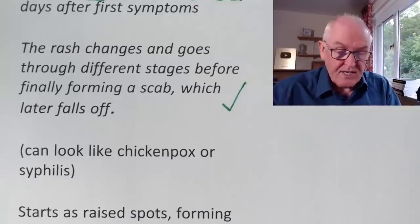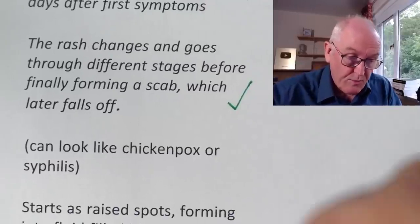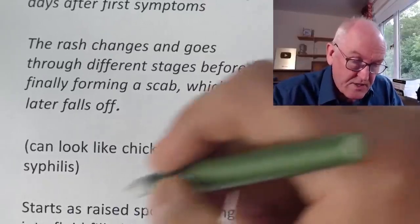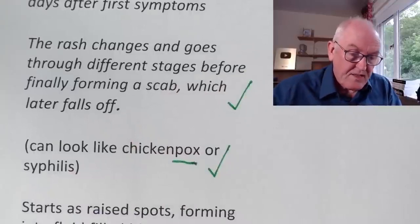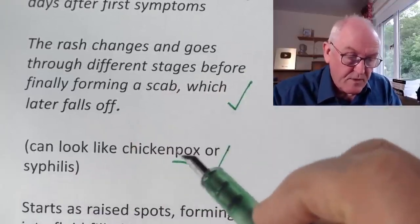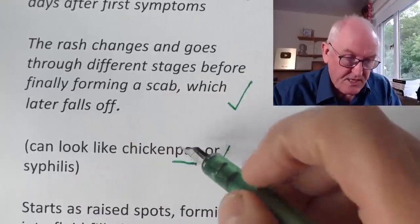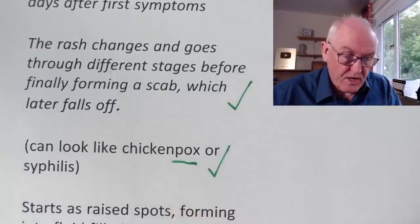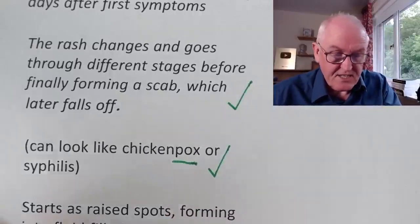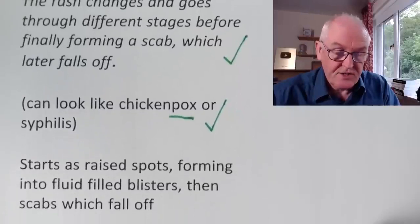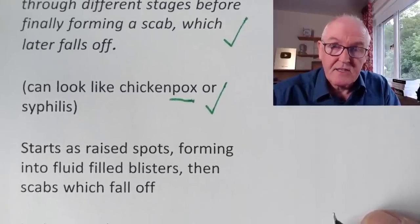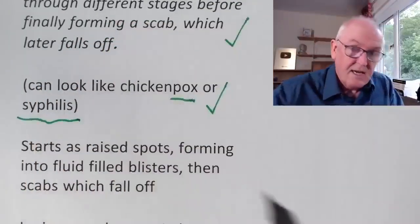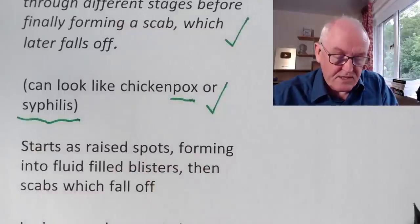The rash can look like chickenpox, syphilis, or smallpox — these are called pox because they produce pustular spots. Thankfully we don't have smallpox anymore, and chickenpox is a completely different virus. Syphilis is a bacterial infection, and we now see very little of it because it's largely treatable with effective antibiotics.